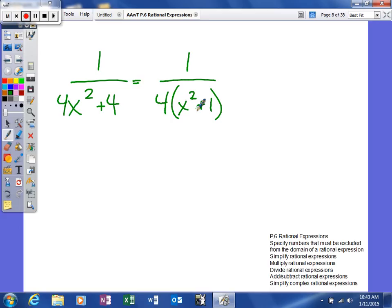When I set my denominator equal to 0, again, this number 4 here, I don't need to worry about. 4 is not going to make me have 0 in my denominator. So when I set this equal to 0 and solve, I get x squared equal to negative 1, take the square root of both sides,